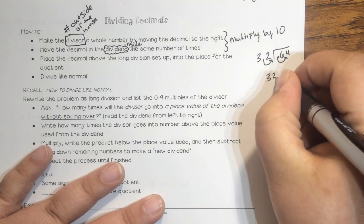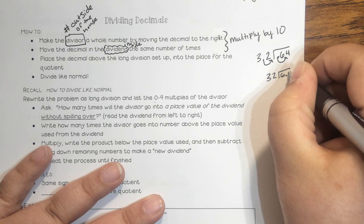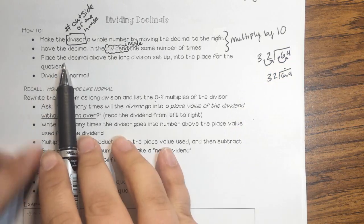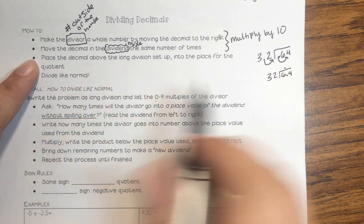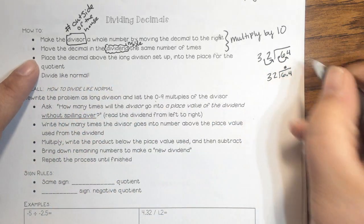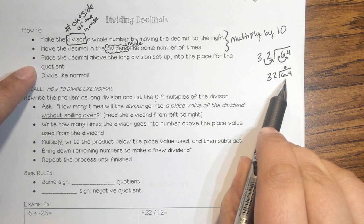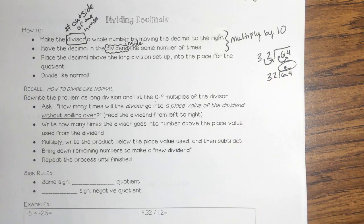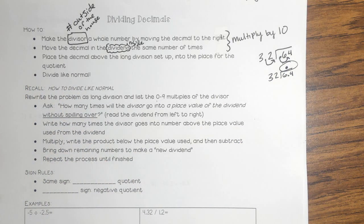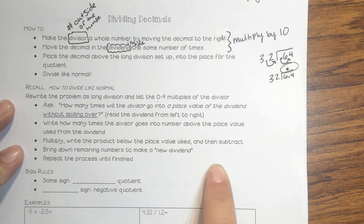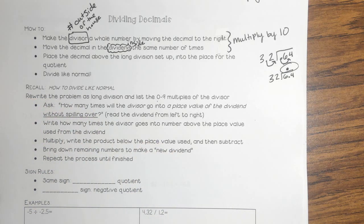So then you could have 32 and 6.4. Now I actually did the second step just now — I placed the decimal above the long division setup in place for the quotient. So this is where your quotient is going to go, just like normal. Now we just get to divide like normal. Just in case you have forgotten because it is a brand new school year and we learned a lot during the summer, this is how you divide like normal.